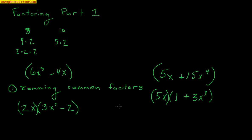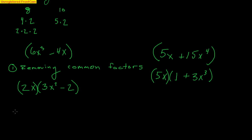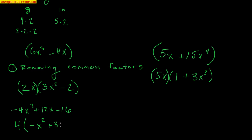We can look at one more example: negative 4x² + 12x minus 16. This is a trinomial. Let's see — negative 4, 12, and 16 all have a factor of 4. So we can take out a 4. Can we take away any x's? We can't, because negative 16 doesn't have any x's, so x is not common between all three terms. We're left with 4 times (negative x² + 3x minus 4). If you want to check, just distribute that 4 back through and you'll see all the terms get created.